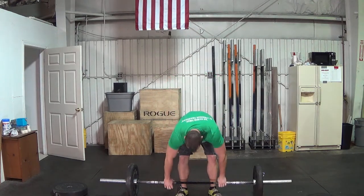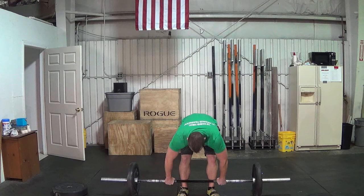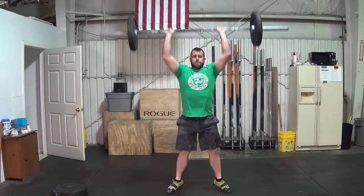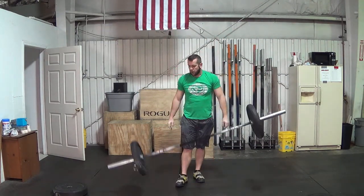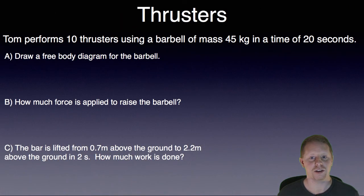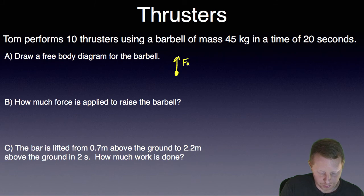First, we'll take a look at Tom. Tom performs 10 thrusters using a barbell of mass 45 kilograms in a time of 20 seconds. Let's take a look at the problems. Draw a free body diagram for the barbell. We'll start with a dot. We have the applied force that Tom applies to the barbell, F up, and the weight of the barbell down.